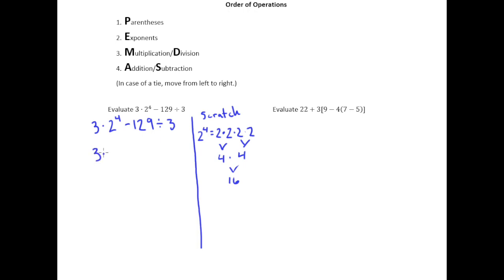So I can replace 2 to the 4th with 16. And so I rewrite everything in this problem that has not been changed. The 3 times, the minus 129 divided by 3, I rewrite all that out again. That's a really important thing to do. I promise you these questions will go so much more smoothly if you do this.